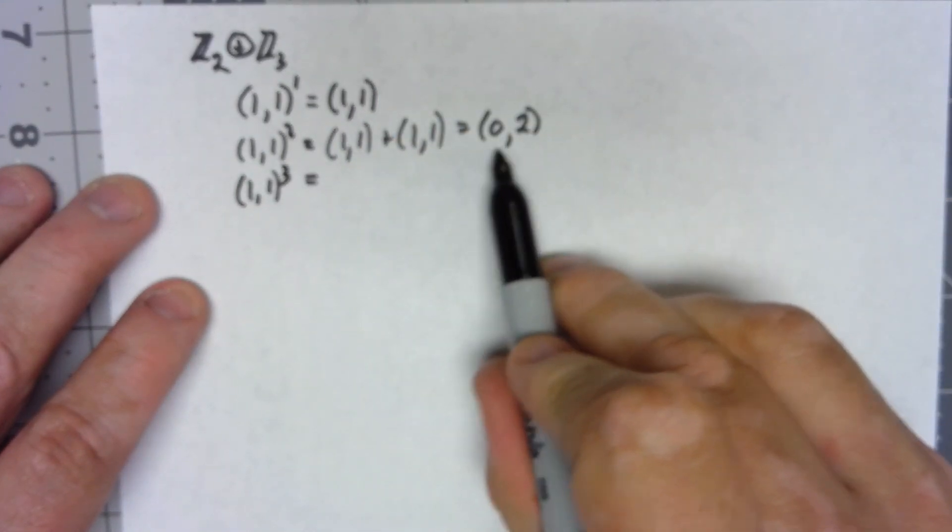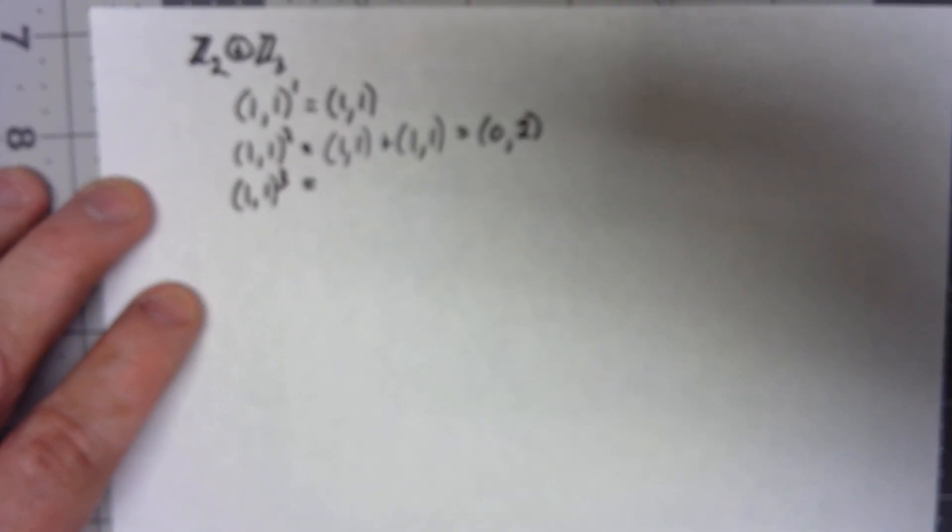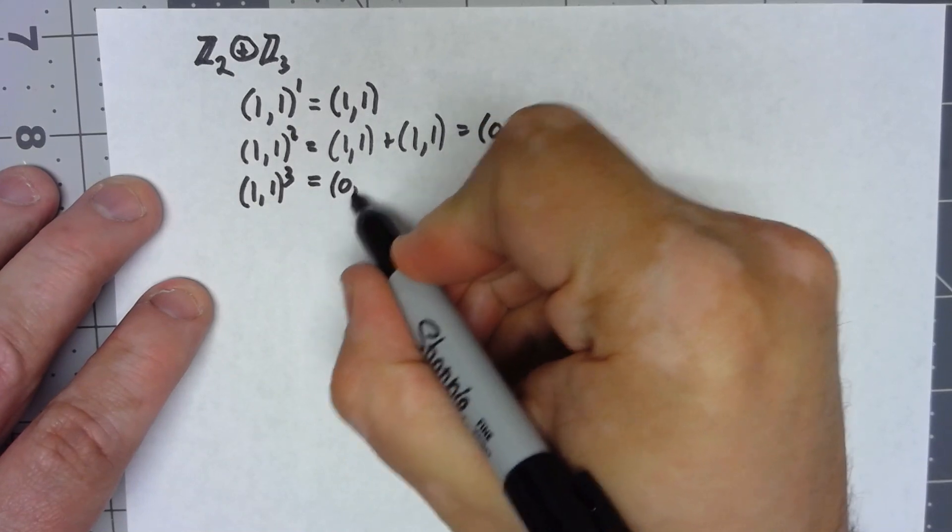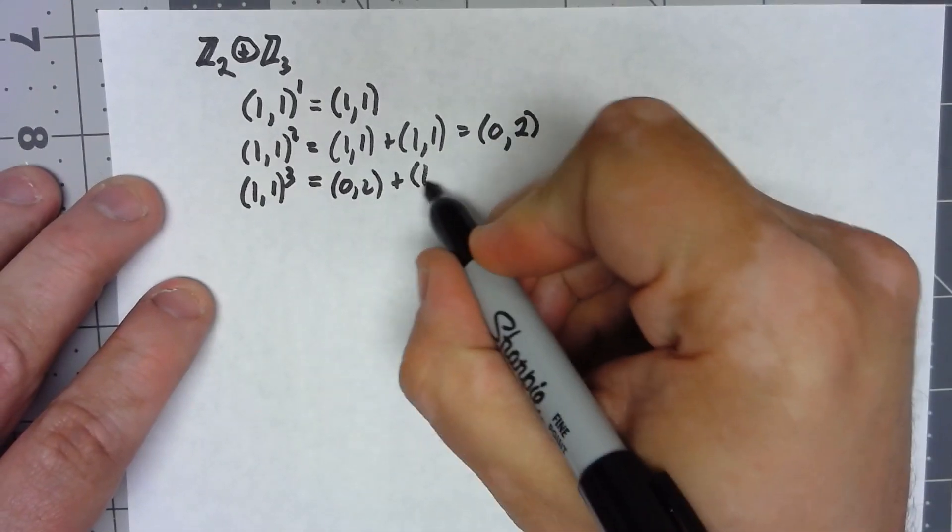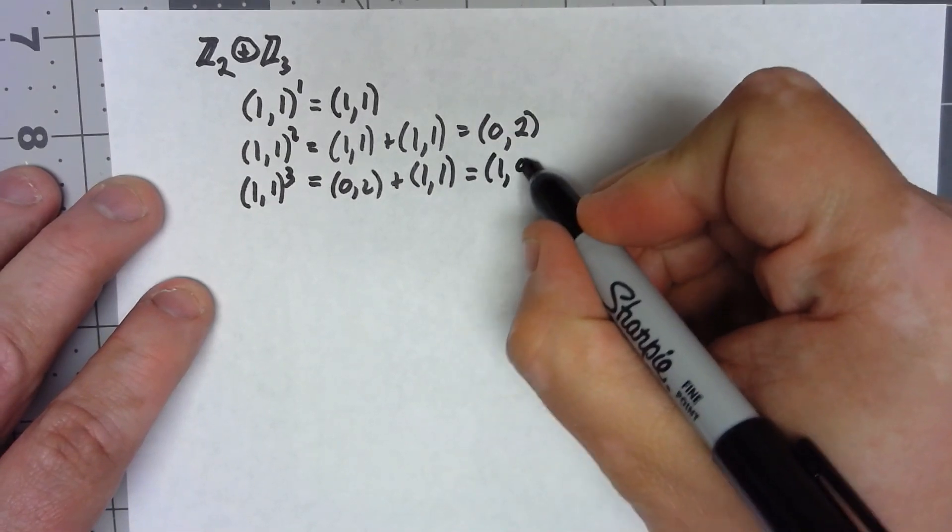The easiest way is to just add (1,1) to the previous thing we had. So we'll get (0,2) plus (1,1) would give us (1,0).